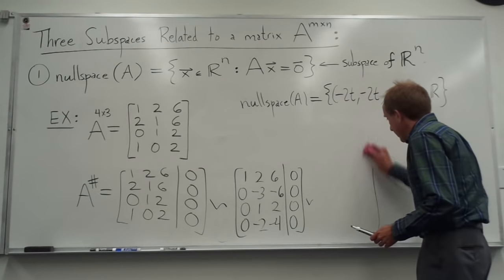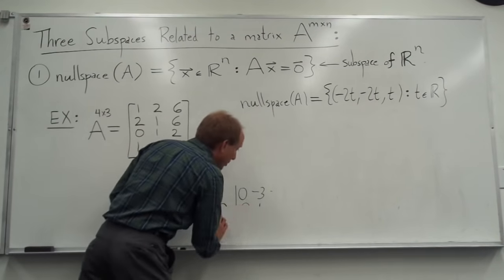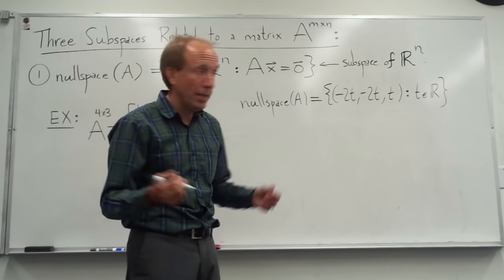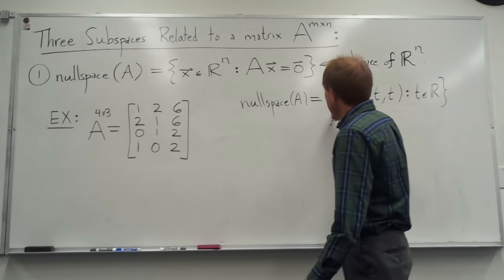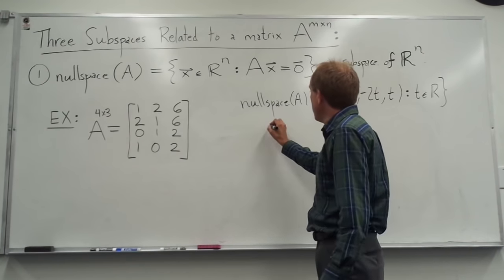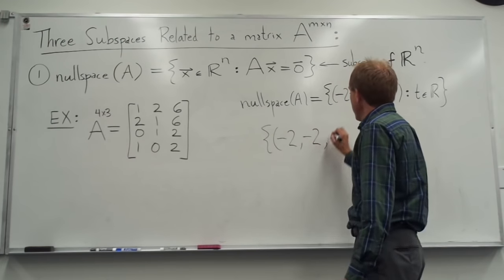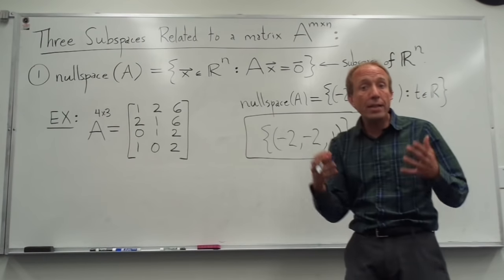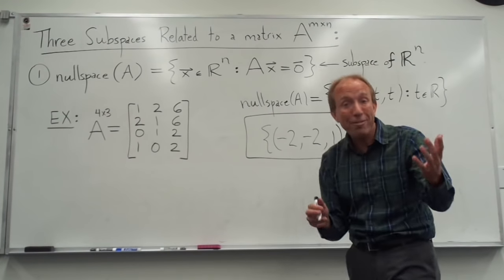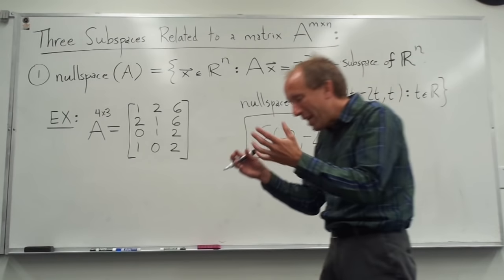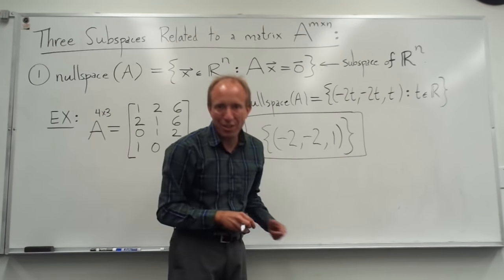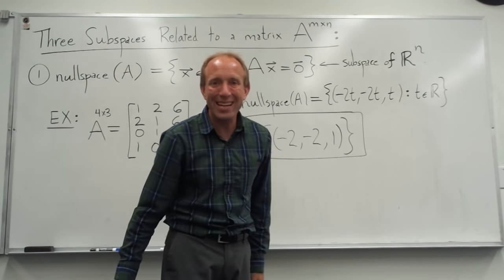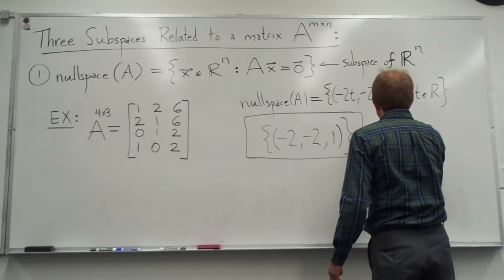Now I want to find a basis for that. Remember, a basis is a spanning set that is linearly independent. The way we get our spanning set is we bust out the variable T. After busting out T, the remaining numbers are negative 2, negative 2, 1. So the vector (negative 2, negative 2, 1) spans the null space. Since it's only one vector, it must be linearly independent — you can't form linear dependencies with a single vector. So this is a basis.